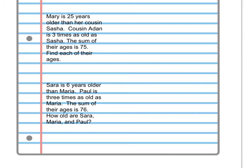Then we combine them into an equation. Sarah is six years older than Maria, so it sounds like Maria is the youngest so far. Paul is three times as old as Maria, so yes, Maria is younger than both Paul and Sarah. So we'll make Maria our variable. I'm going to go ahead and write Maria, then Sarah, and Paul. I'm going to rewrite the information that's written in English and write it without words.